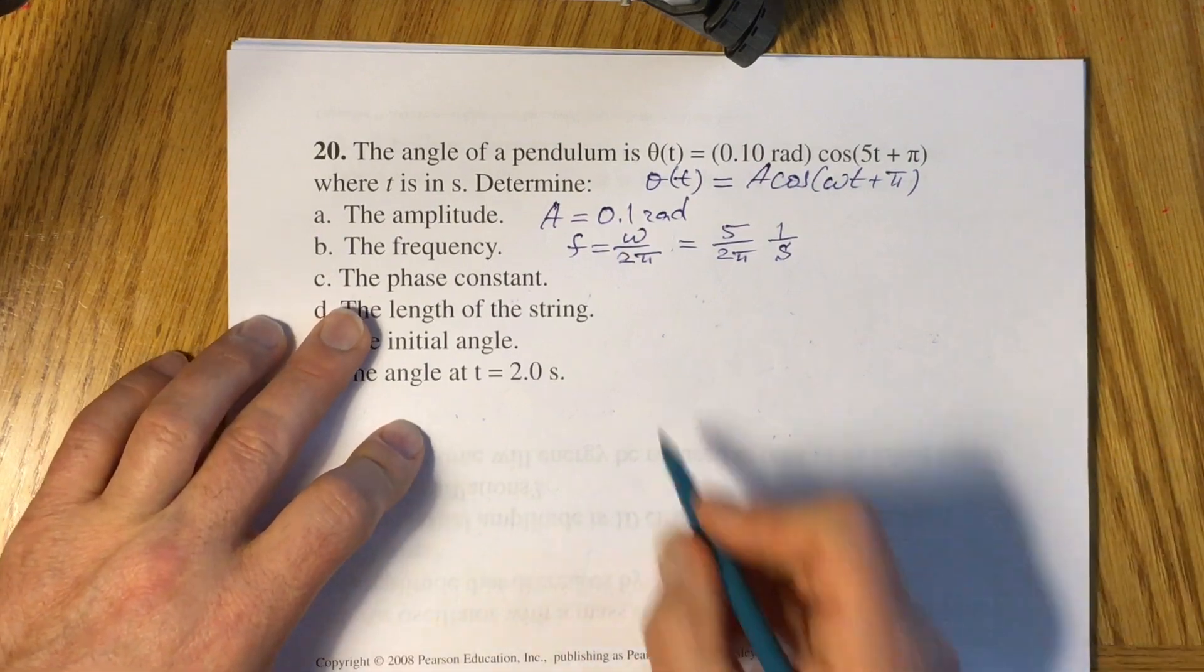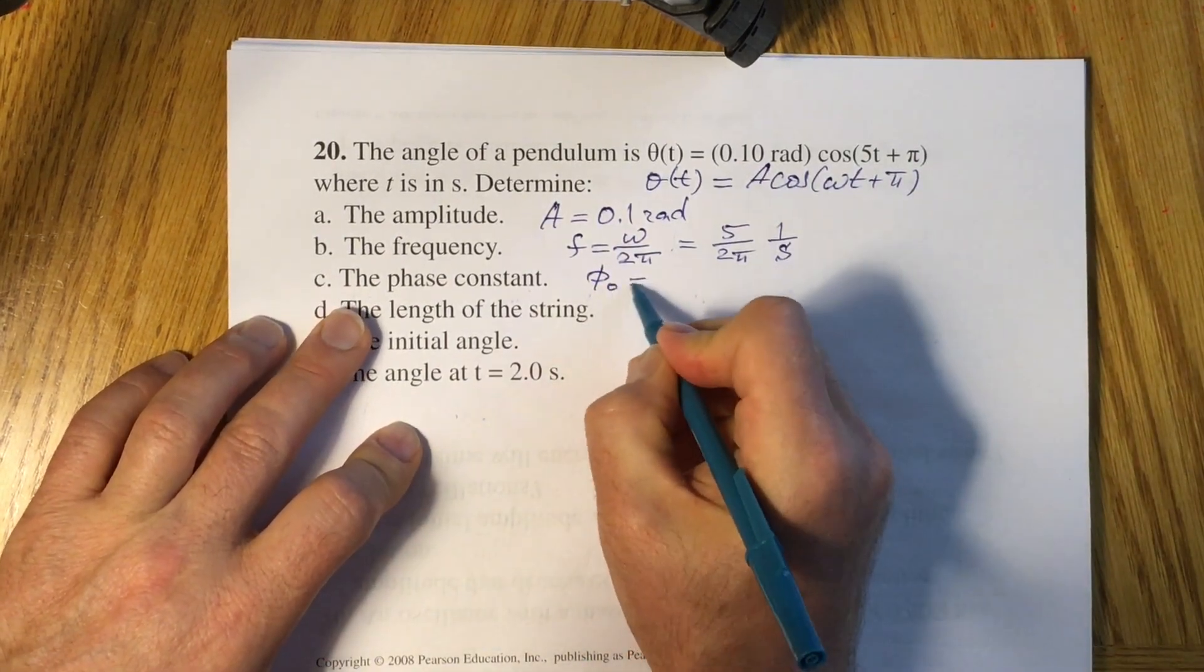Now phase constant or initial constant from our formula we have equal to pi.